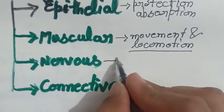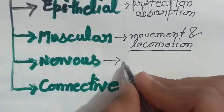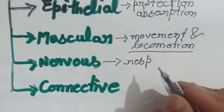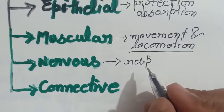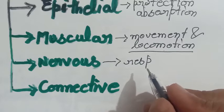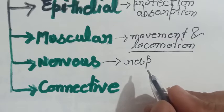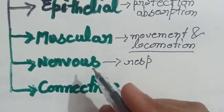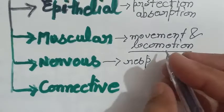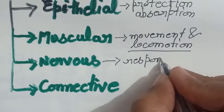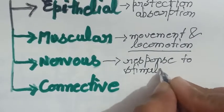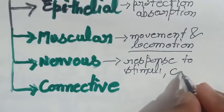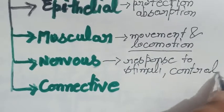Now next is nervous tissues. They help to respond, means we the animals can show the response against anything. Like we show any kind of response against any change in the environment. So such response is a function of our nervous tissues. So that is the response to stimuli. Stimuli means change in environment. And also helps in the control and coordination.